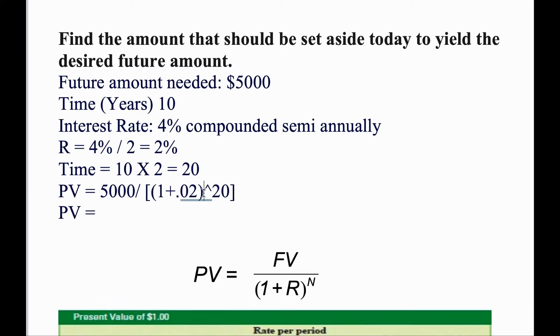So in your calculator, you should get 3,364.86. This is the present value or the amount that should be set aside today and invested for 10 years compounded semi-annually at 4% in order to get 5,000 in the future.